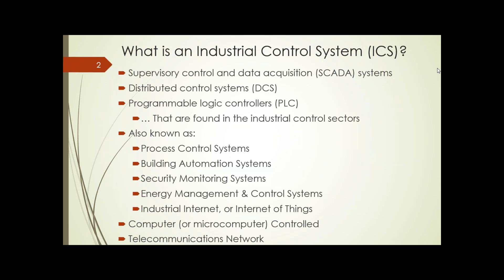The utility industry distinguishes between control systems in the large geographic distribution space and those in central energy production facilities. Distributed control systems control boilers, steam controls, and electrical characteristics associated with power generation. Similarly, a gas distribution system will have a SCADA system managing pressures out in the distributed pipeline, while central compressor stations use distributed control systems. Essentially, they have three central parts: a sensor to detect conditions, a controller to change something based on that sensor, and a microprocessor-based controller to make a decision.